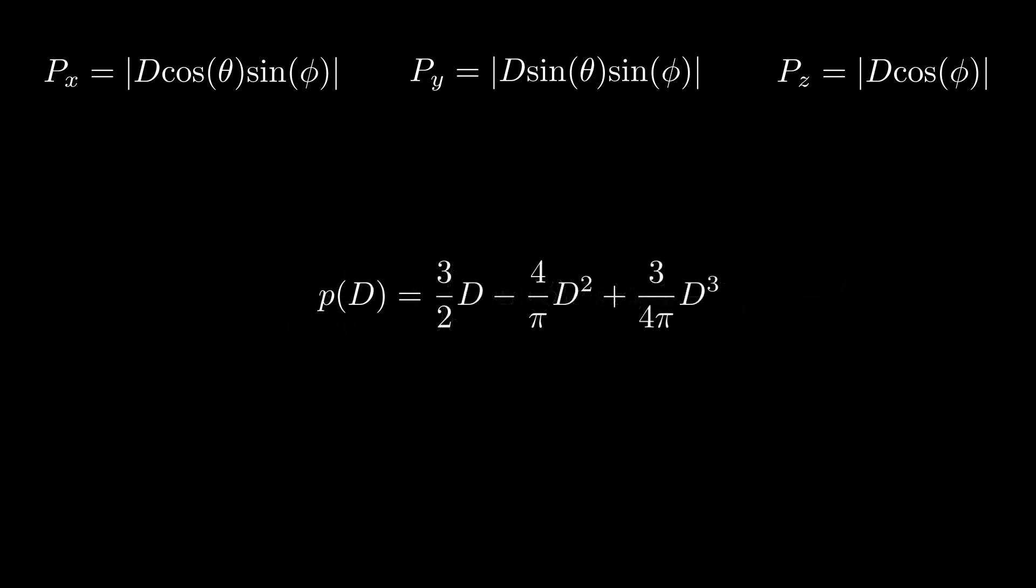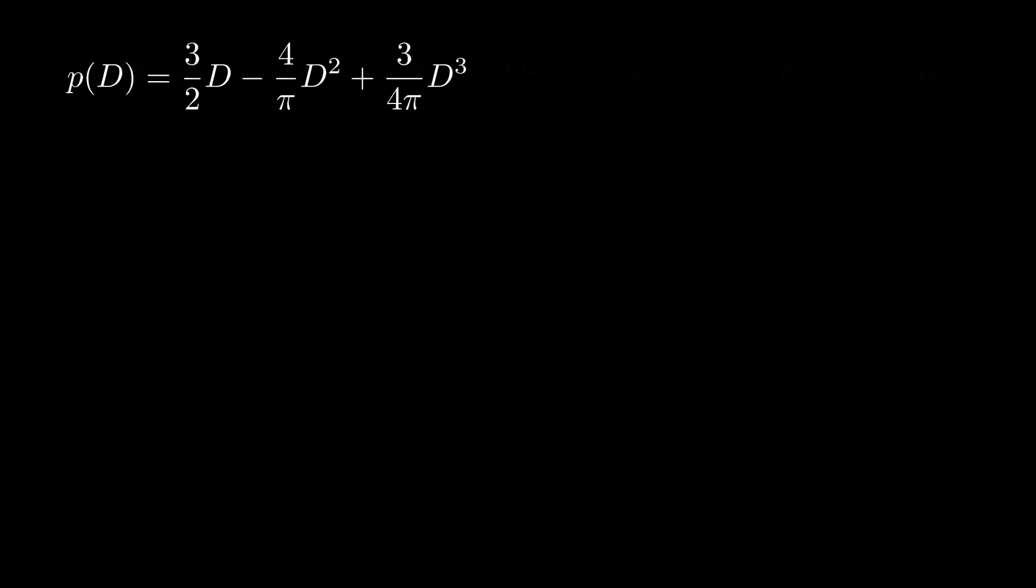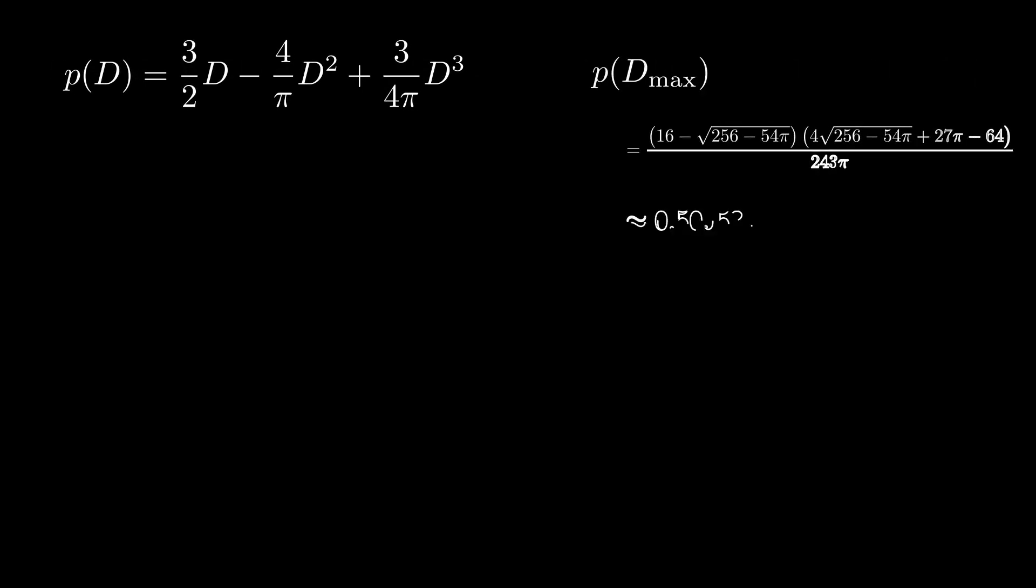Solving this integral ultimately leaves us with the probability of a single cross in 3D for D less than or equal to 1. We find that the maximum probability is just above 50% and occurs when D is about 0.745.